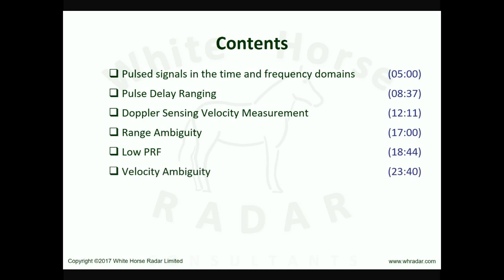Similarly, Doppler and hence velocity ambiguity can result from the choice of radar PRF, but this too can be avoided by choosing a suitably high value of PRF, leading to the notion of a high PRF waveform. In the general case, however, a PRF occupies the middle ground in which both range and velocity may be ambiguous, and this is the so-called medium PRF.